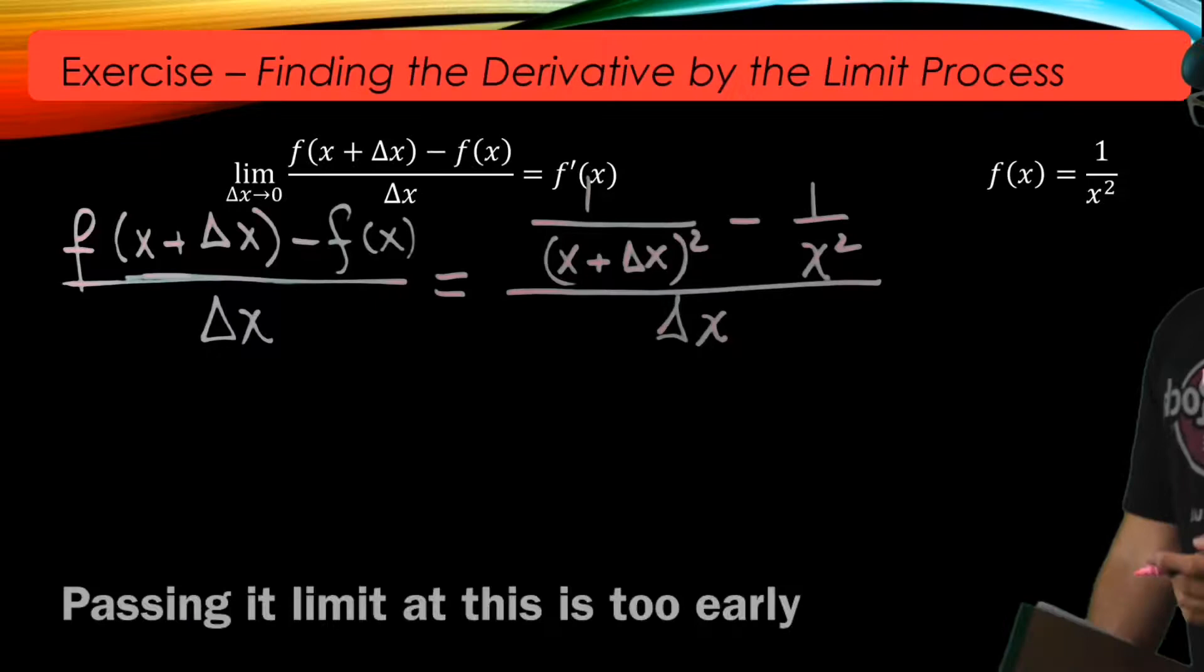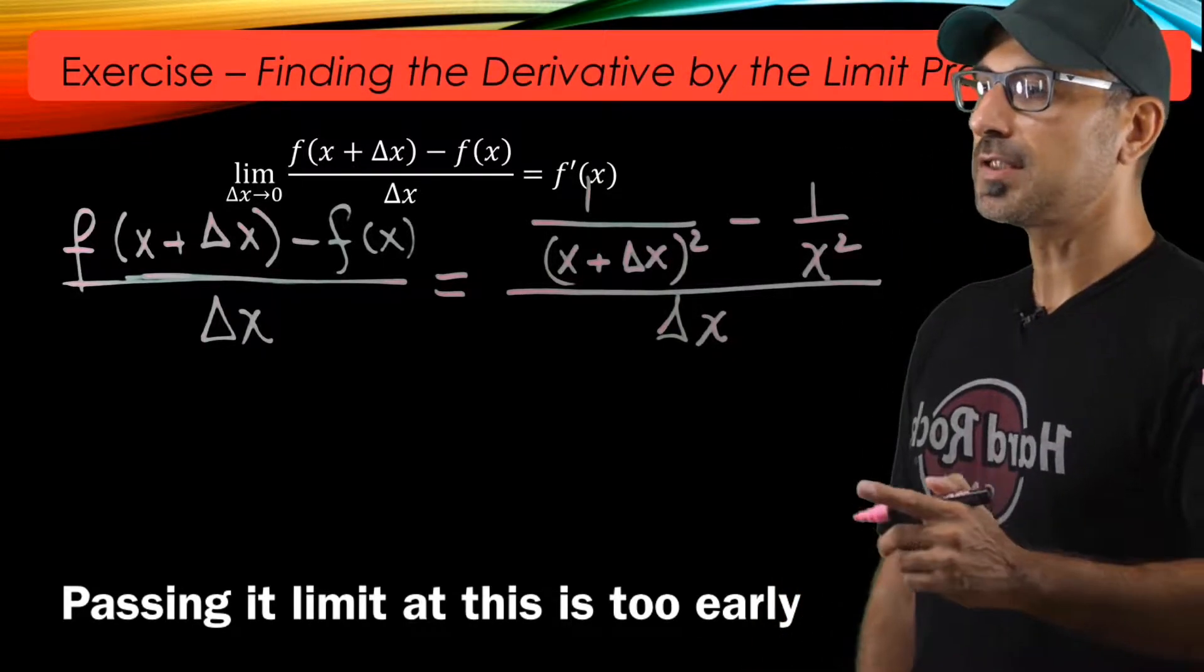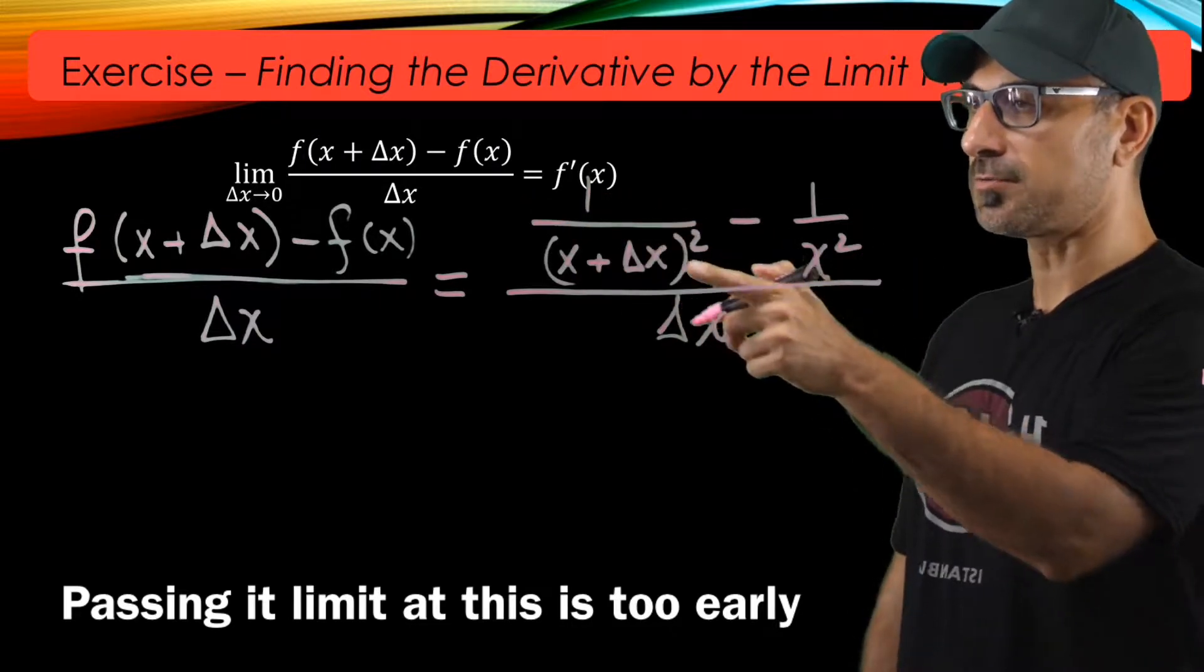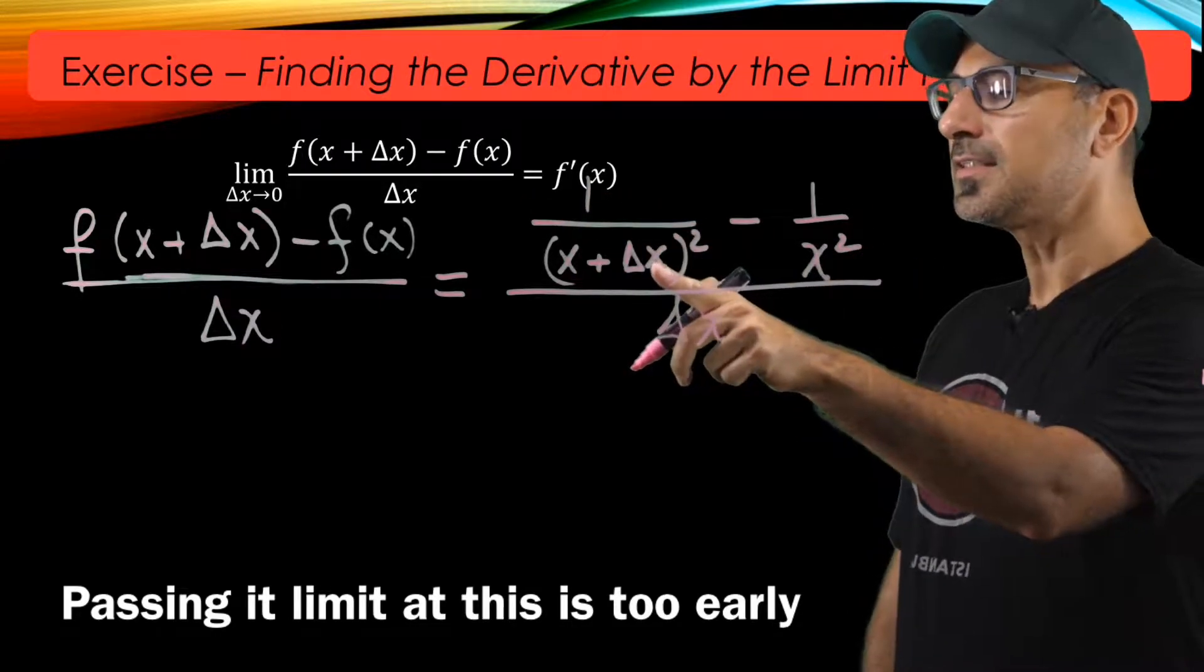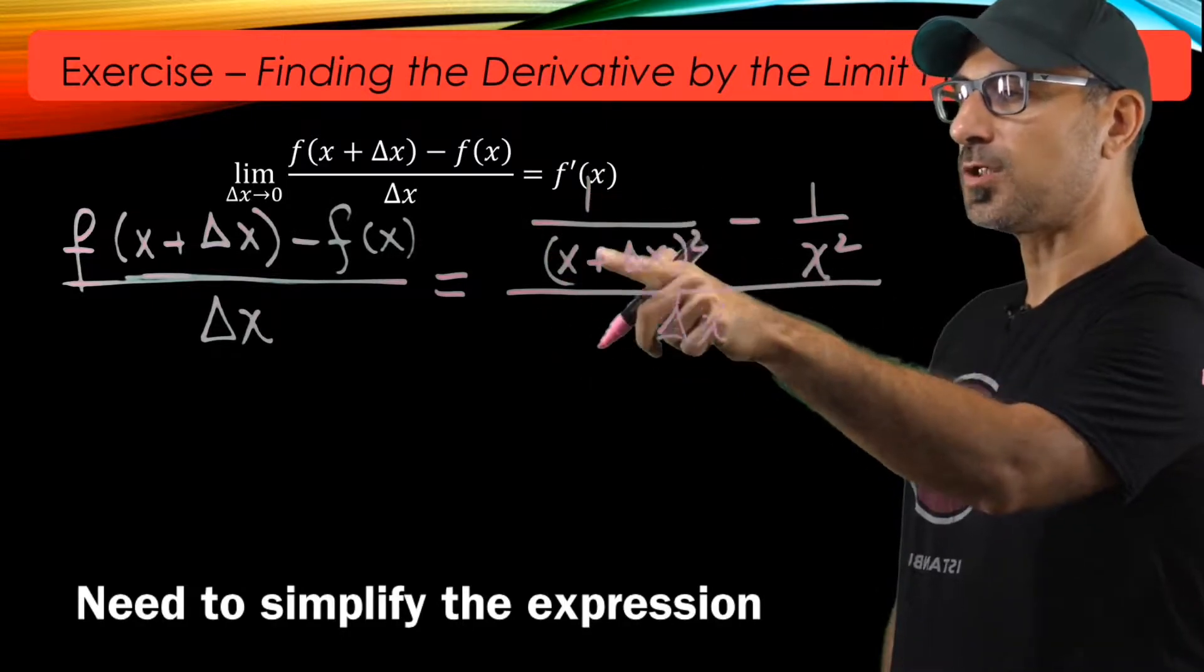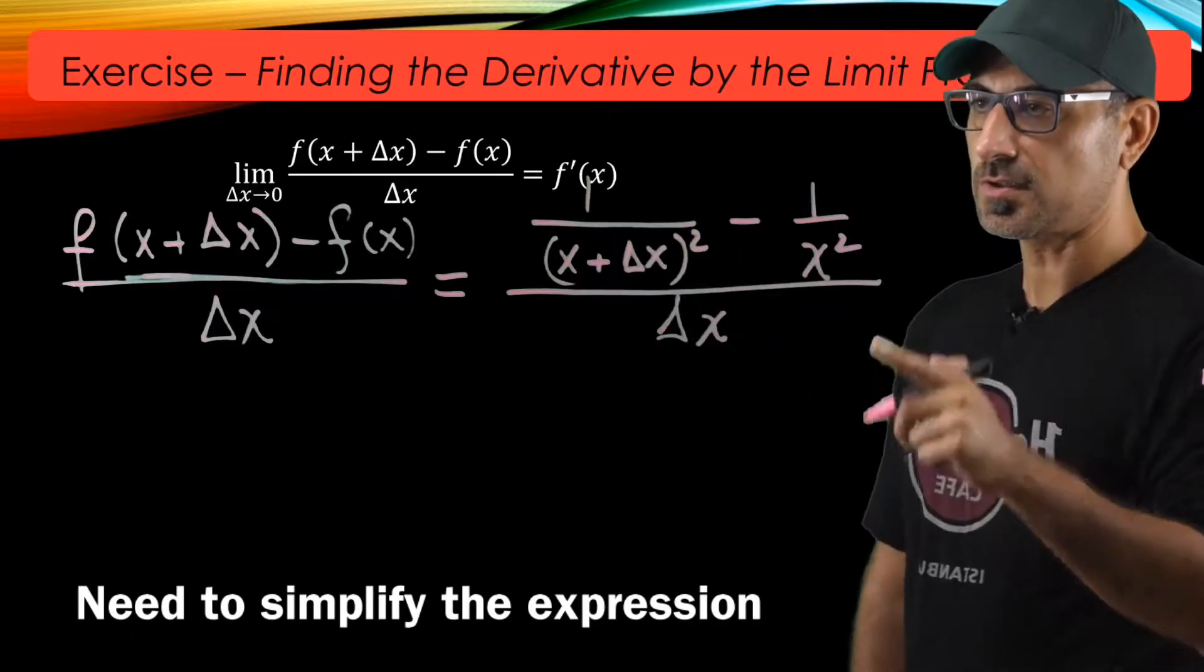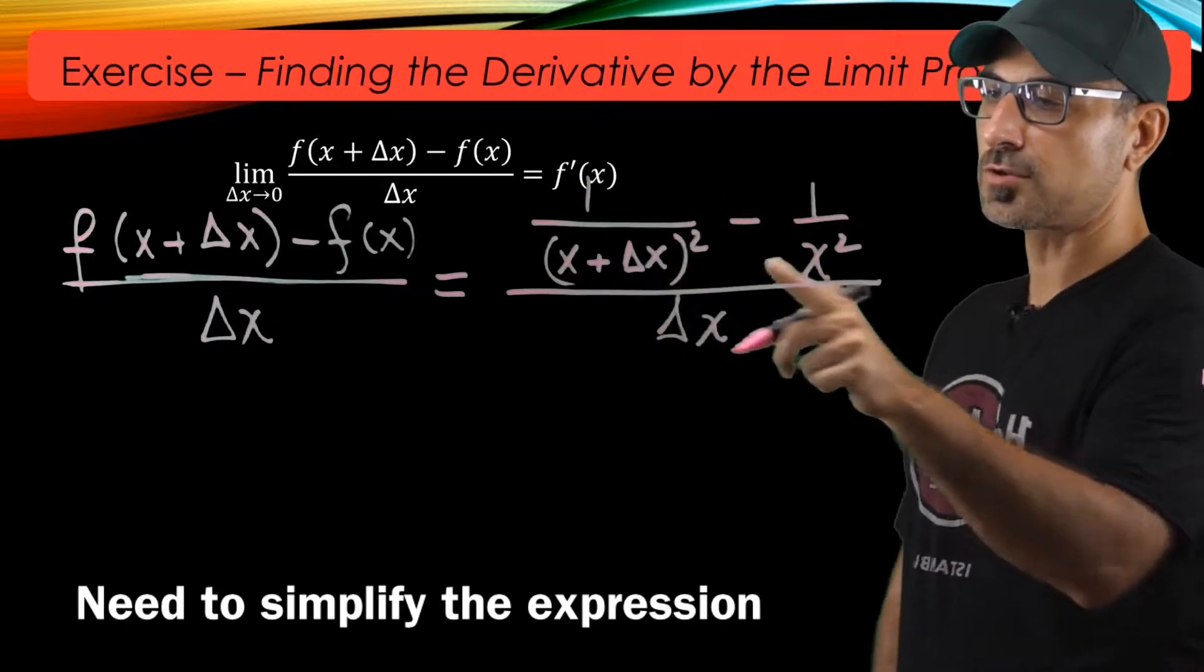And obviously you realize that we need to do some simplification here, because if we pass the limit for this ratio at this moment, since delta x approaches 0, this term approaches 1 over x quantity squared, and the top of this ratio would just converge to 0. And since delta x converges to 0, this becomes 0 over 0.